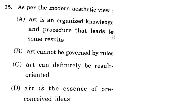Now, as per the modern aesthetic view, the options were: A — art is an organized knowledge and procedure that leads to some result. Art being an organized knowledge was the view of the ancient Greeks, not modern aesthetics. According to modern aesthetics, art cannot be governed by rules — that was their philosophy. Option C is that art can definitely be result-oriented, and option D is that art is resistant to preconceived ideas. So options A, C, and D relate to ancient Greeks, while option B is for modern aesthetics: art cannot be governed by rules.